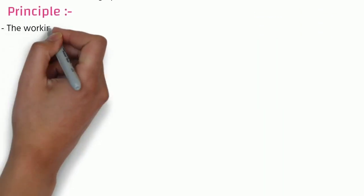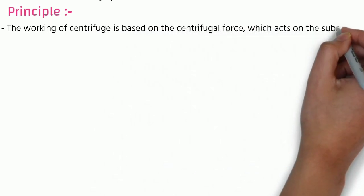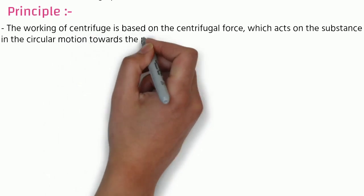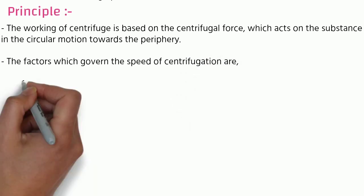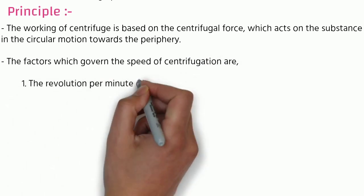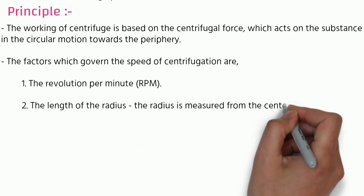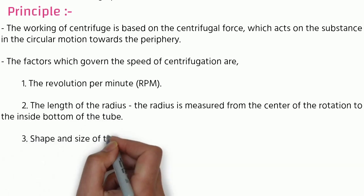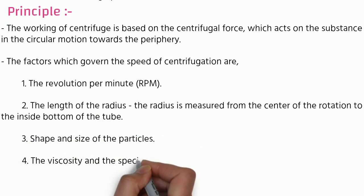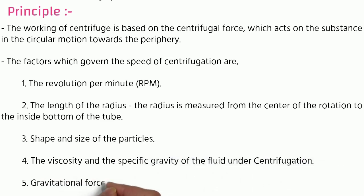The working principle of centrifugation is based on centrifugal force, which acts on a substance in circular motion towards the periphery. The factors that govern the speed of centrifugation are: revolution per minute (RPM), the length of the radius — measured from the center of rotation to the inside bottom of the tubes — the shape and size of the particles, the viscosity and specific gravity of the fluid, and gravitational force acting on the particles.